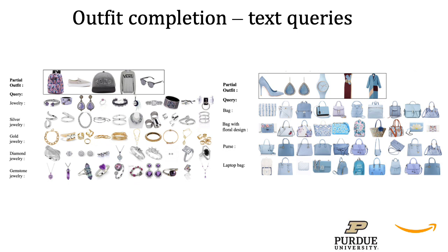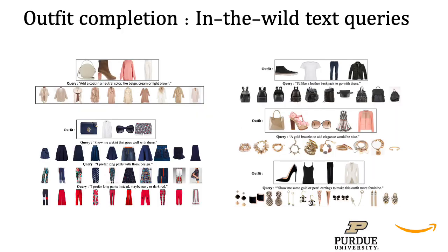Similarly, for each partial outfit we show results for different types of text queries — for jewelry on the left and for bags on the right. This figure shows the results of our framework for in-the-wild conversational queries. Thank you.